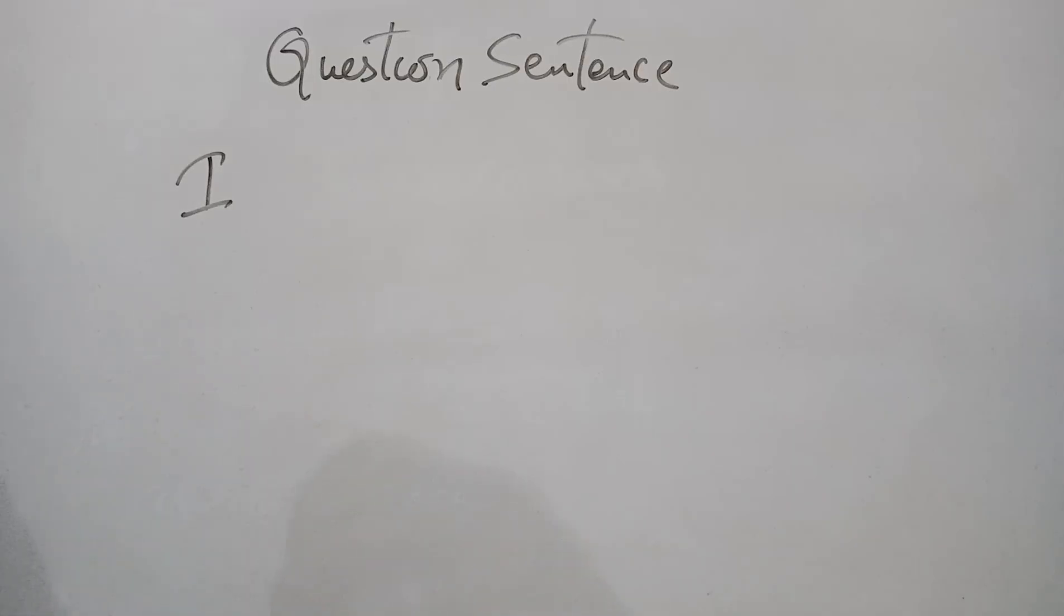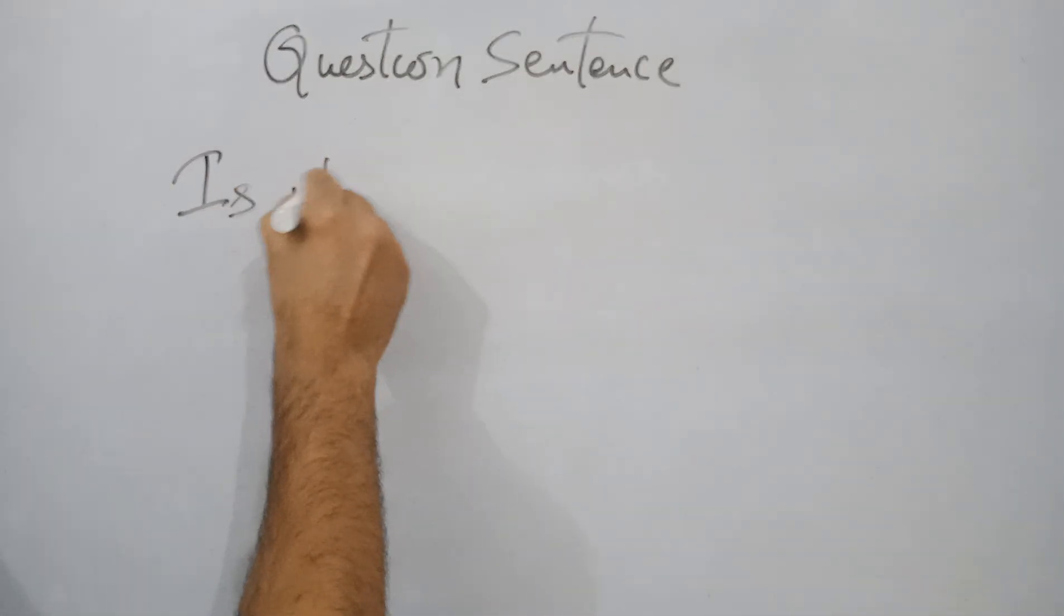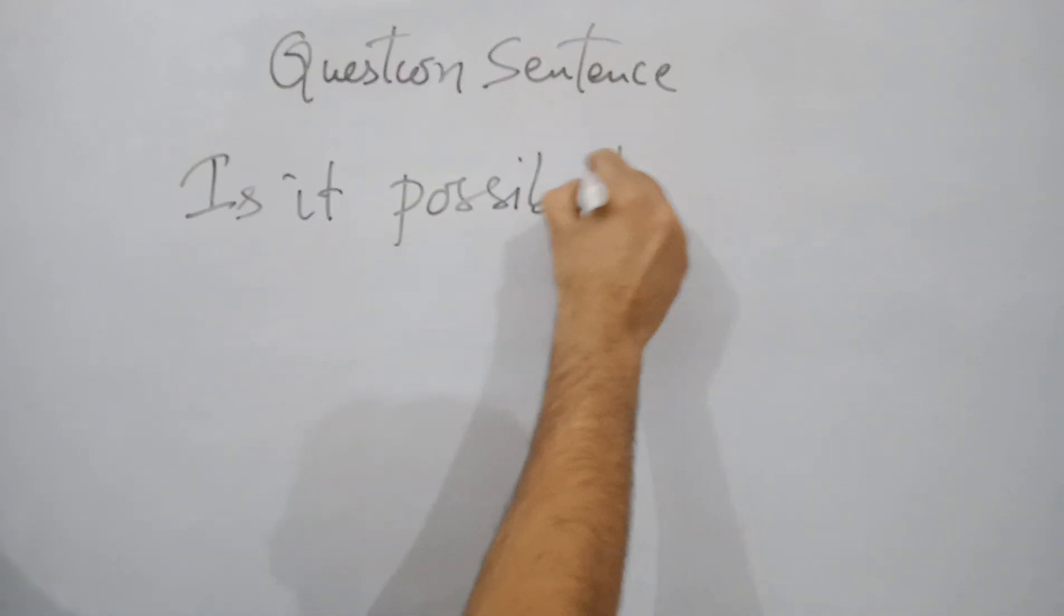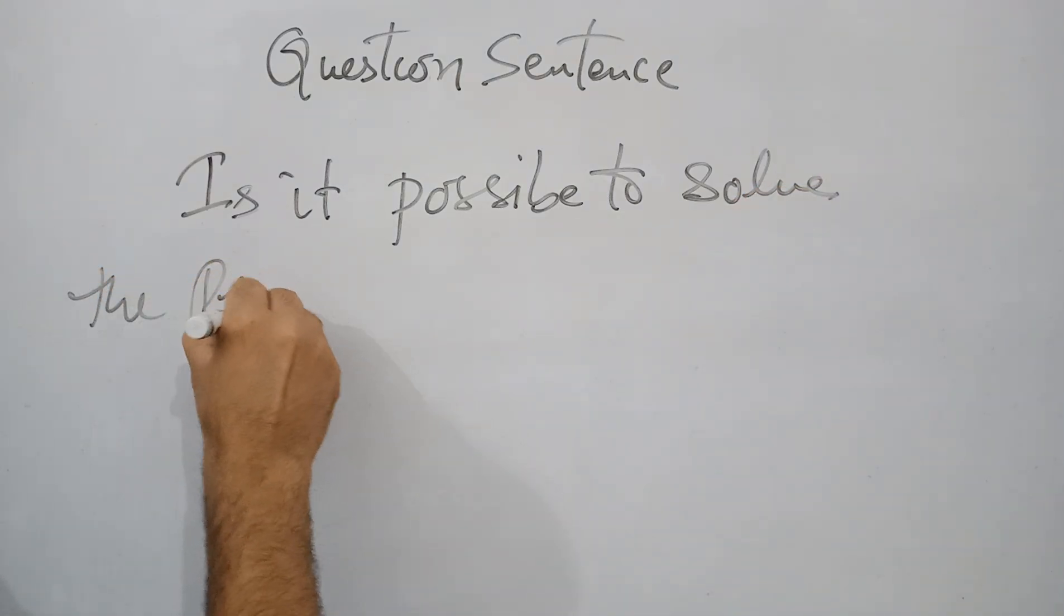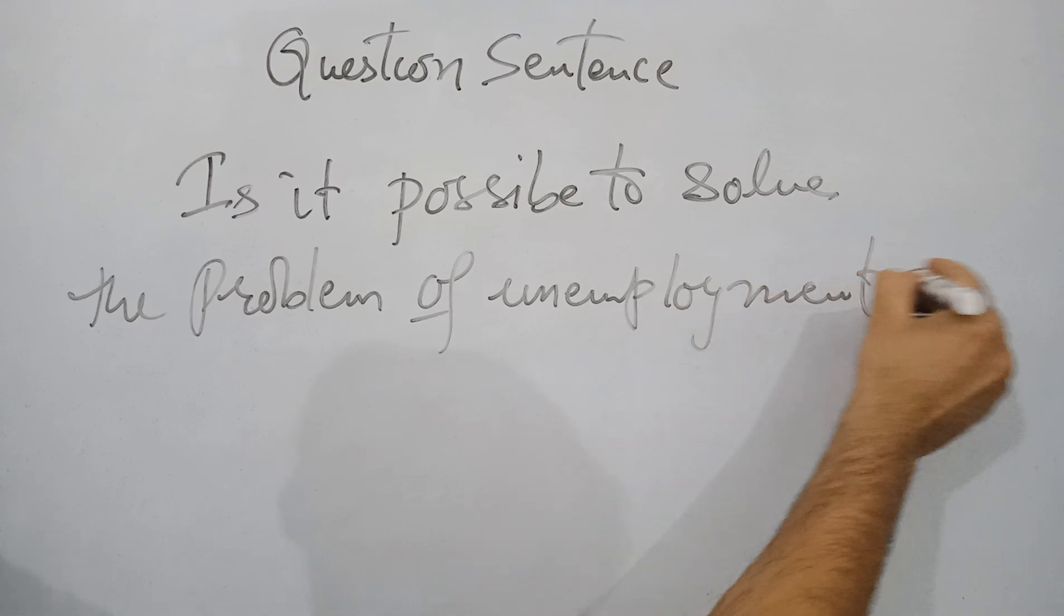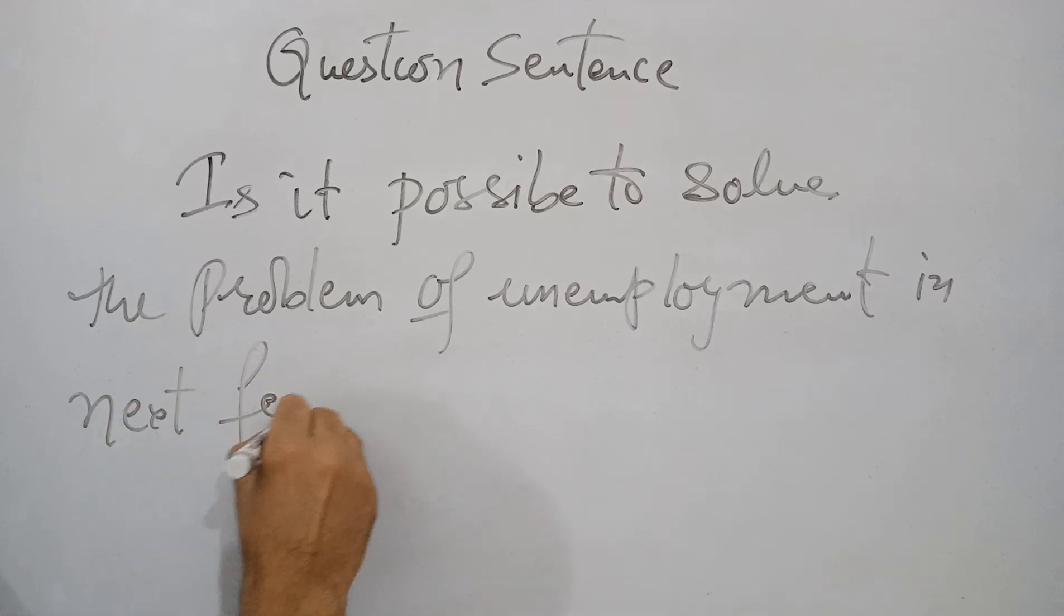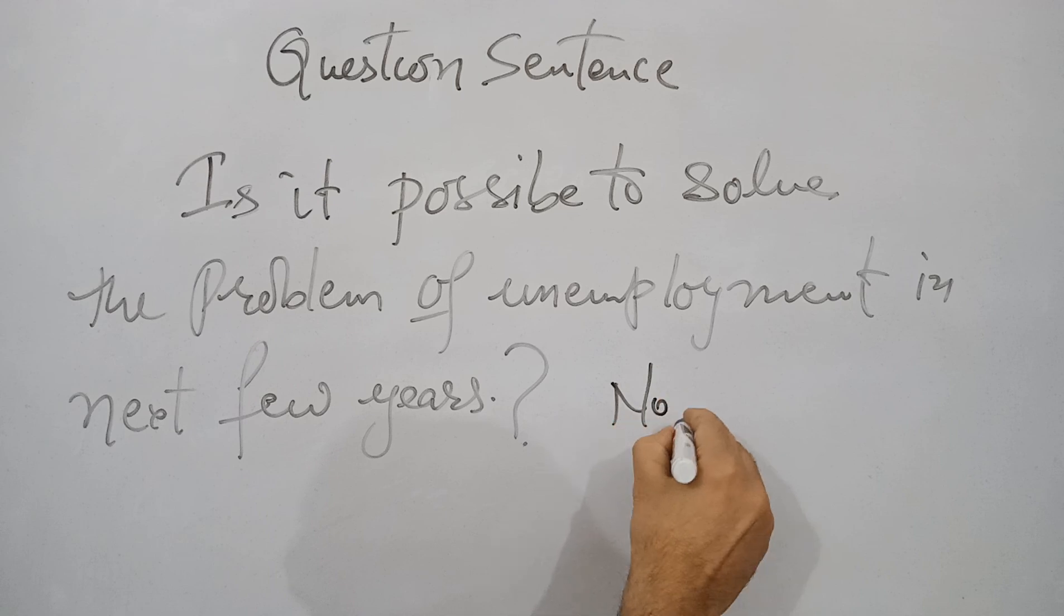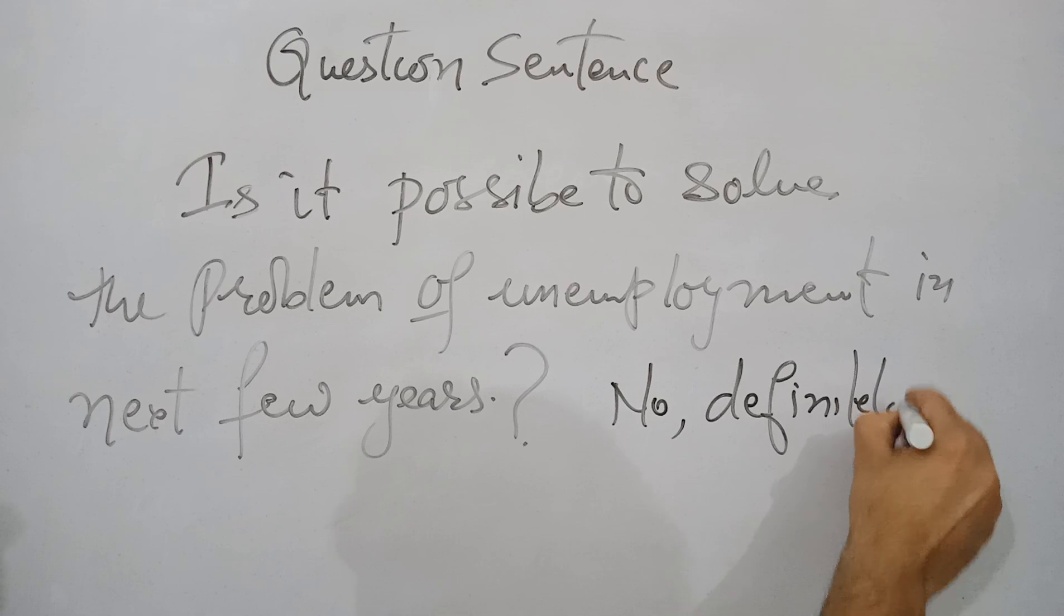Question sentences we will write in introduction of writing task 2. Suppose you get a topic about unemployment or employment. You can write: Is it possible to solve the problem of unemployment in next few years? So in this way you will write such kind of sentence in introduction and after that, what is your opinion? No, definitely not. You are negative about that. Or you can say yes, of course it is possible. So in this way, one question sentence can be written in introduction depending upon what kind of essay you get.